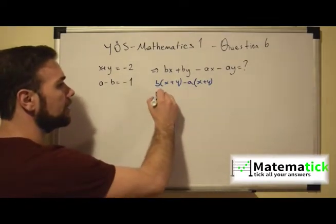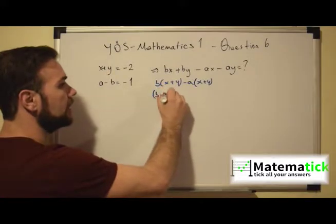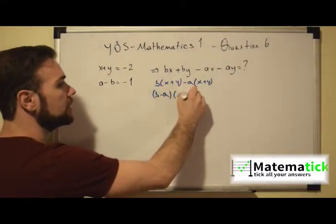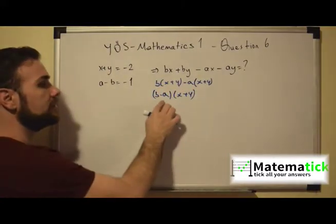So I can write this as b minus a times x plus y.